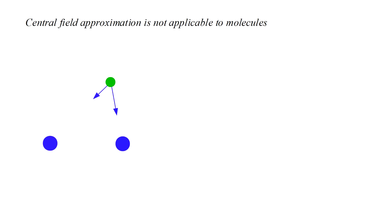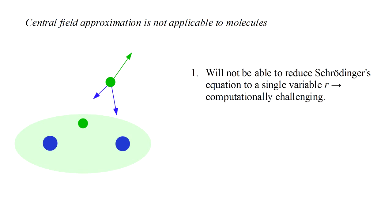However, the central field approximation is not generally applicable to molecules. The net attractive force on an electron due to the pull of two or more nuclei will not be spherically symmetric about some central point. And the repulsive force due to the other electrons, even when treated in an average sense, is also unlikely to have spherical symmetry. Because of this, we will not be able to reduce Schrödinger's equation to a single radial variable r, leaving us with a computationally much more challenging problem.